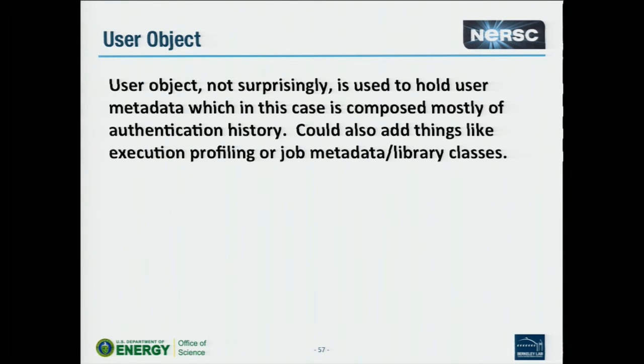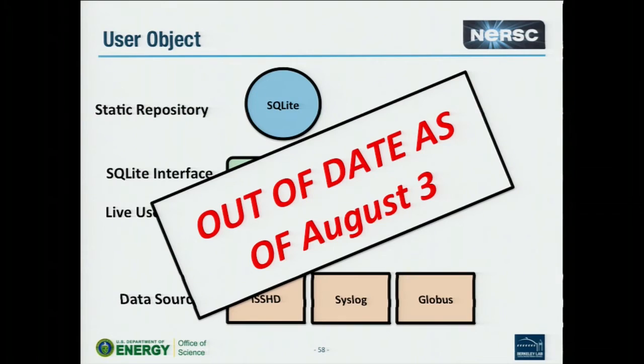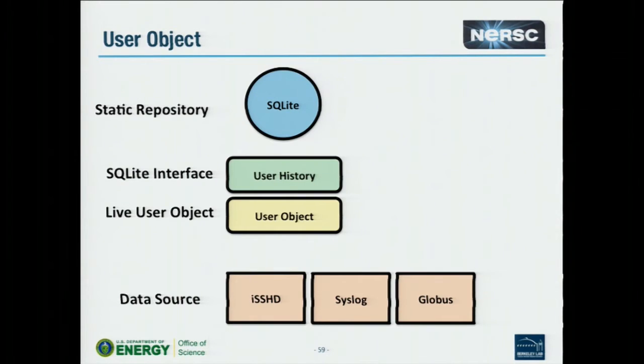The primitive holds metadata about users: where they came from, countries. You can tack execution information in there. The user object holds metadata — execution profiling, job submission metadata, library classes, all sorts of stuff. We came up with something that was really awesome until two days ago, and now it's a horror show. We end up with an SQLite database on the backend and an interface to it.